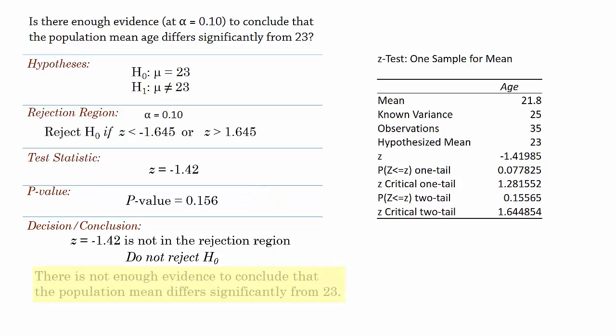We can then conclude as follows: There is not enough evidence to conclude that the population mean differs significantly from 23. And that concludes the test. Thanks for watching.